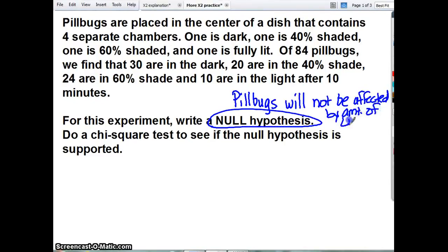That way, if it does fail the chi-square, you have proven that there is a statistical difference, that they do seem to have a preference.